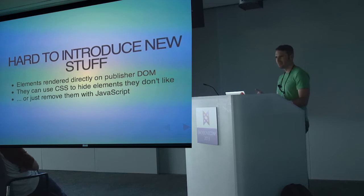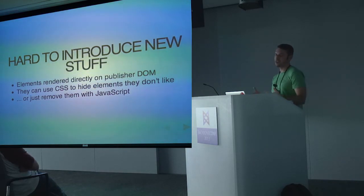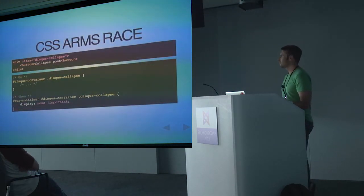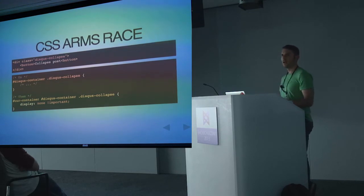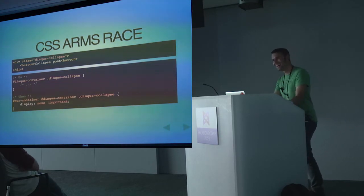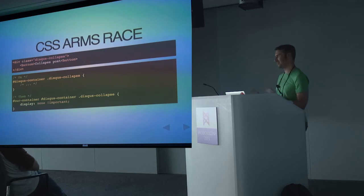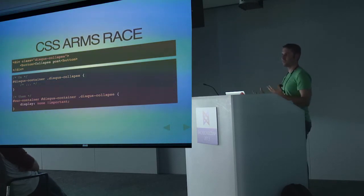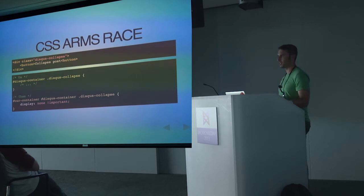We got into these CSS nuclear arms races where we'd over-specify things — use important tags everywhere, double ID selectors, because nobody uses double IDs. Then somebody would say, fine, now we'll use triple IDs. It was getting silly. Some stuff we wanted people to customize, but other things — like the login UI — we wanted to look the same everywhere so people knew how to log in or out. That's exactly the stuff they would change. It was really irritating.